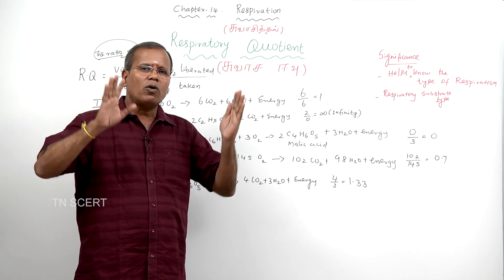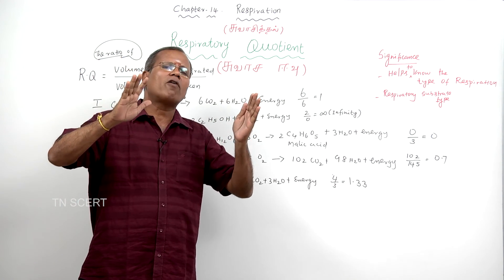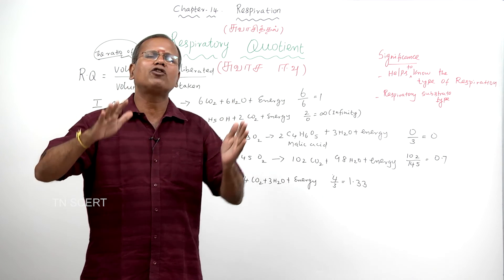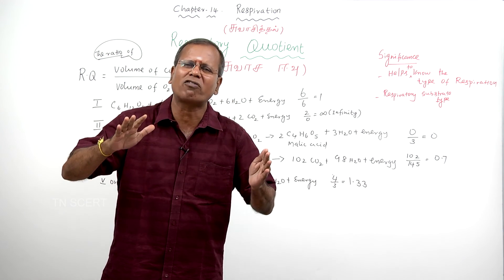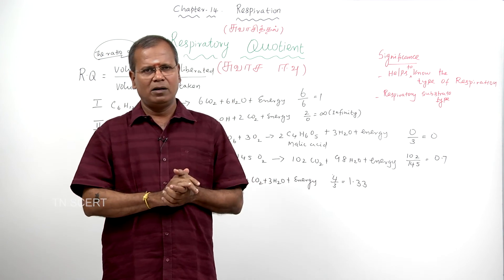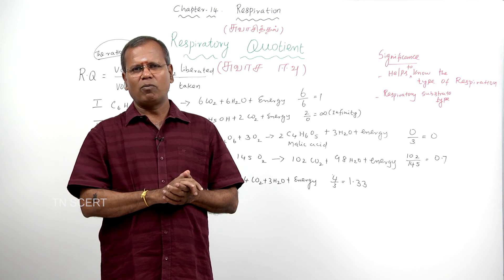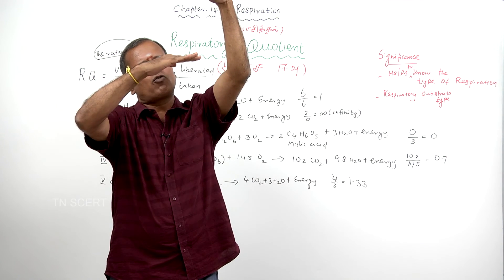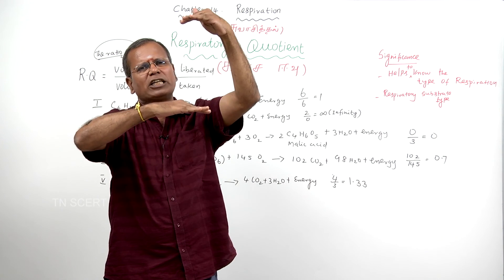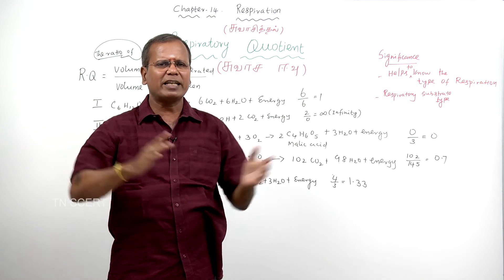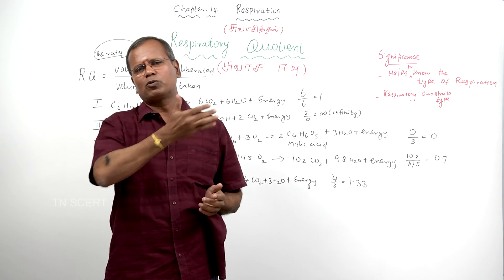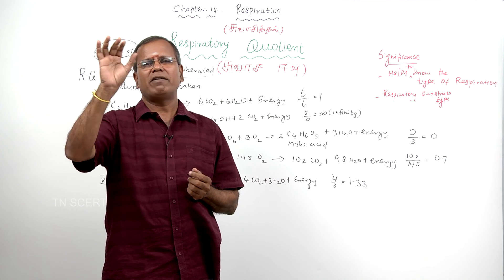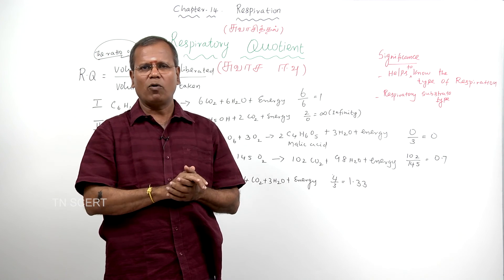The respiratory quotient is nothing but the volume of carbon dioxide evolved divided by the volume of oxygen consumed or taken during respiration. This ratio is what we call the respiratory quotient.